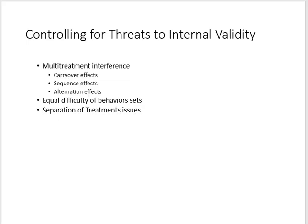We control for threats to internal validity with comparative designs in a couple of ways. We want to be mindful of multi-treatment interference — things like carry-over effects, sequence effects, or alternation effects. Randomization of our two comparisons is really important in this design. We also want to ensure equivalent difficulty of behavior sets and watch for separation of treatment issues.